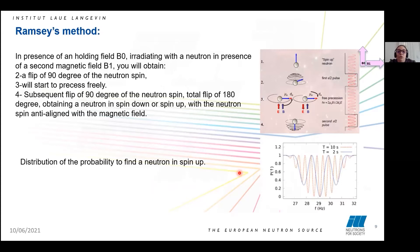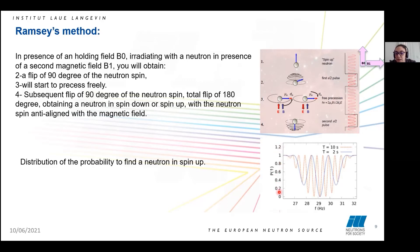One of the methods we need to discuss is the Ramsey method. In the presence of a holding field B0 and another magnetic field B1, in step two the neutron spin flips by 90 degrees. In step three, you have the free precession of the neutron spin for some time. Then the neutron spin flips again by 90 degrees. Starting from a spin-up neutron state, you end up with a spin-down state. This graph shows the probability to find the neutron in the spin-up state as a function of frequency: at certain points there is zero probability of finding the neutron spin-up, confirming the spin-down state.